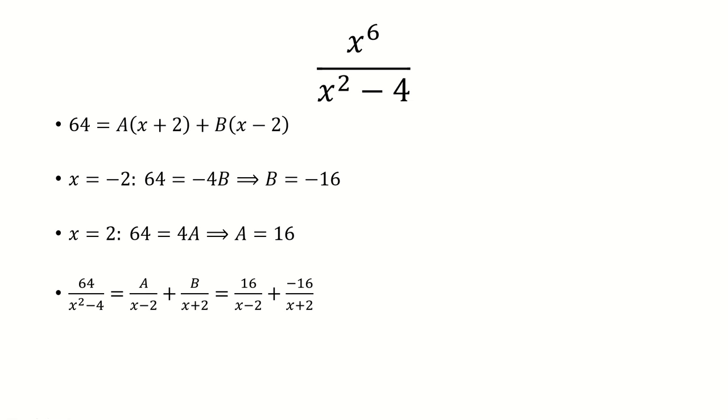Putting it all together, 64 over x squared minus 4 is 16 over x minus 2 plus negative 16 over x plus 2.